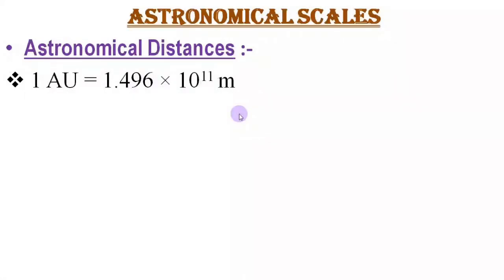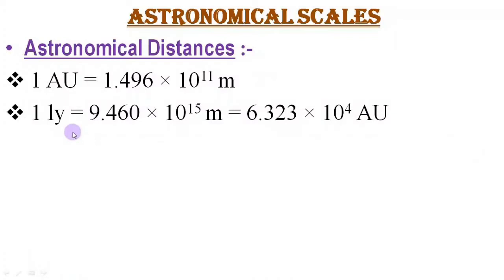Astronomical Unit is the mean distance between the Sun and the Earth. Numerically, one Astronomical Unit is equal to 1.496 × 10¹¹ meters. We have another unit to measure distance between stellar objects, which is called Light Year. One Light Year is the distance travelled by light in one year. Numerically, one Light Year is equal to 9.460 × 10¹⁵ meters.